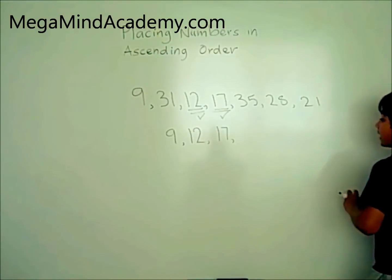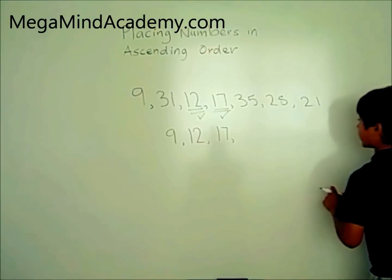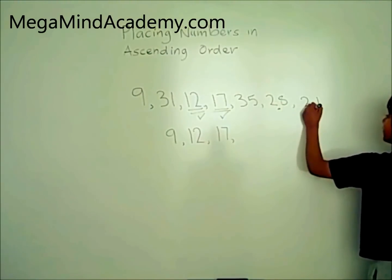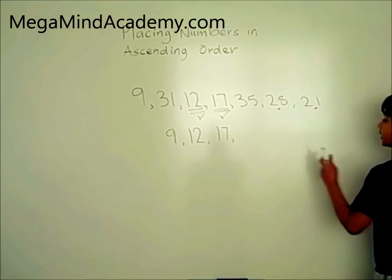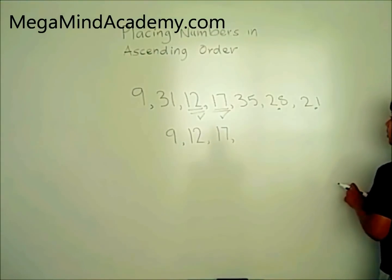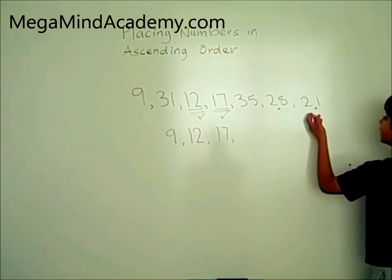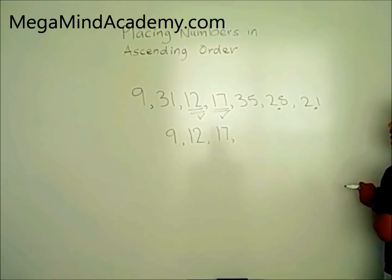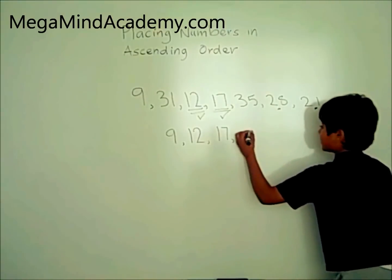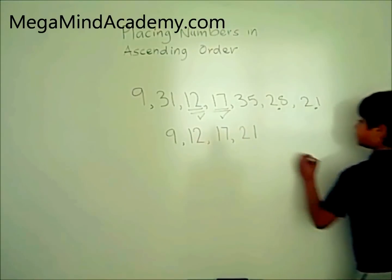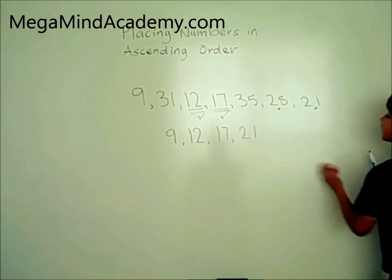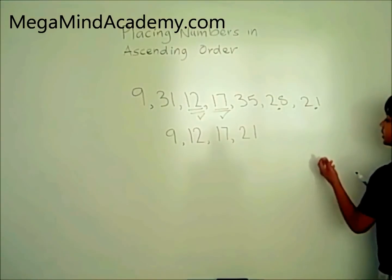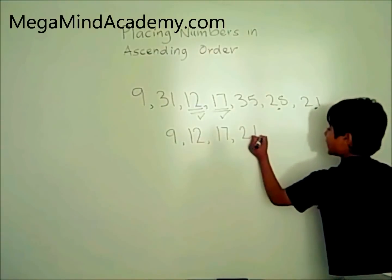Now that we got the numbers which are less than 10 and less than 20, let's look at the numbers which are less than 30. The numbers which are less than 30 are 28 and 21. 21 is the closest higher number to 17; there are no other numbers between 17 and 21. So we put 21 next to 17. That leaves us with 28. We put 28 next to 21.